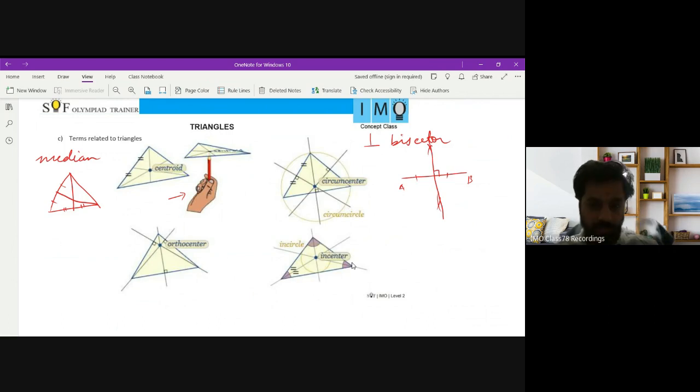For all three sides, if we draw the perpendicular bisectors, they will intersect at a point which we call the circumcenter. Look at this word 'circum' - it comes from circle or circumference. Why is it so? This point will be equidistant from the three vertices.